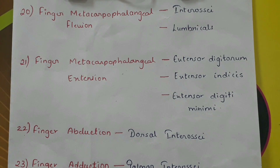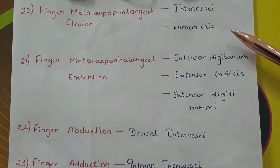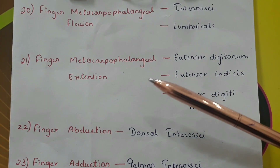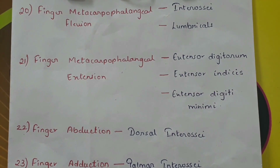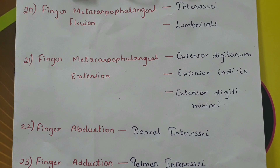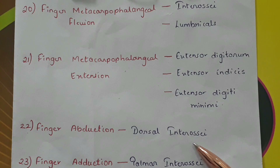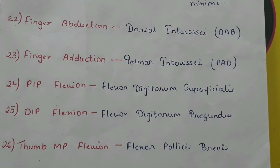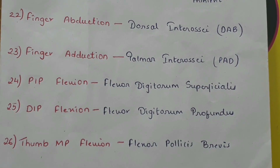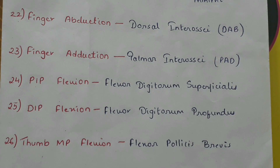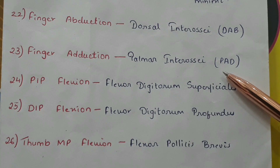Finger metacarpophalangeal (MCP) flexion by the interossei and the lumbricals. Finger MCP extension by the extensor digitorum, extensor indicis, and extensor digiti minimi. Finger abduction by dorsal interossei and finger adduction by the palmar interossei. You can remember this by DAB: D for dorsal interossei helps in abduction, P for palmar interossei helps in adduction.